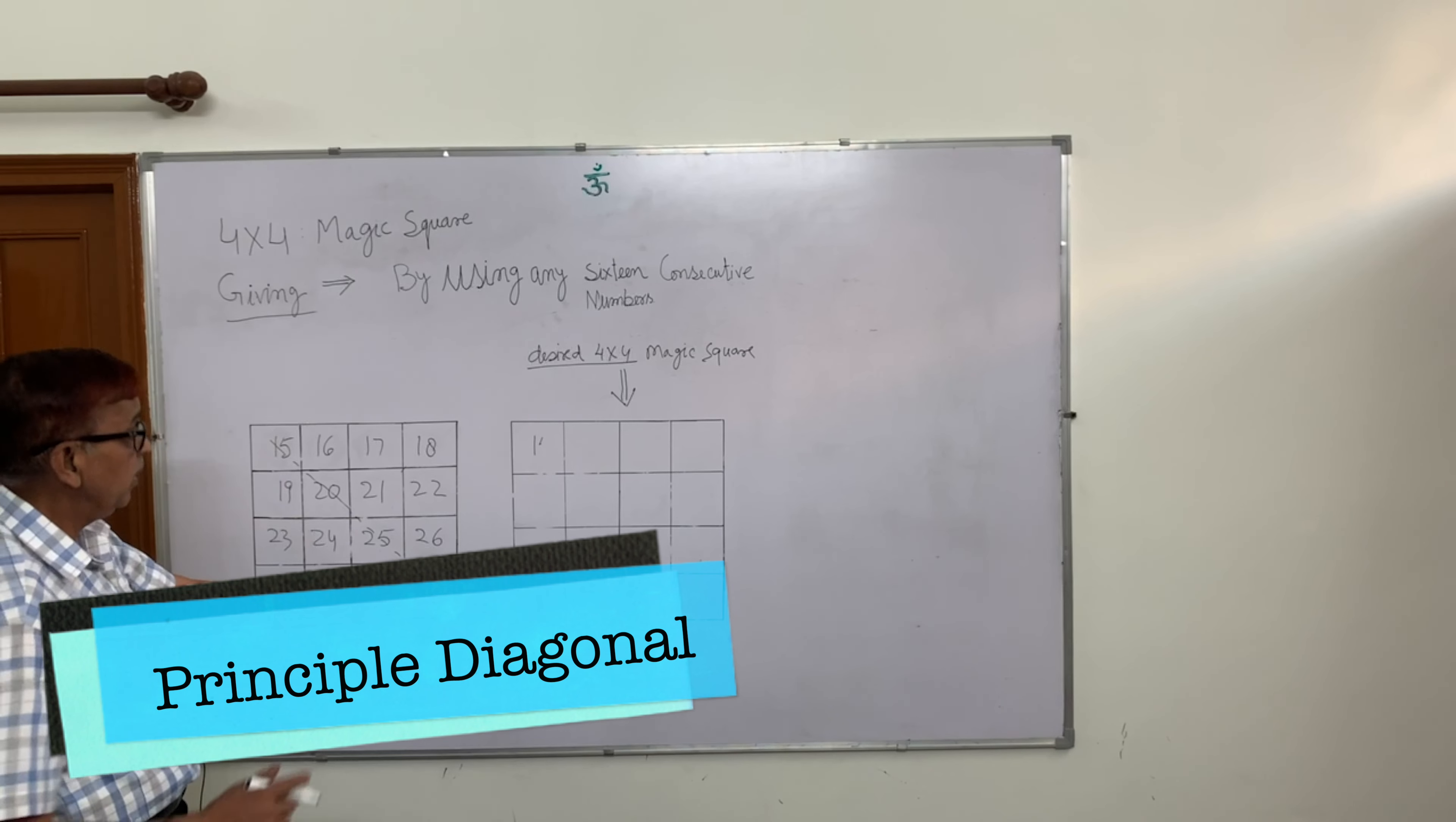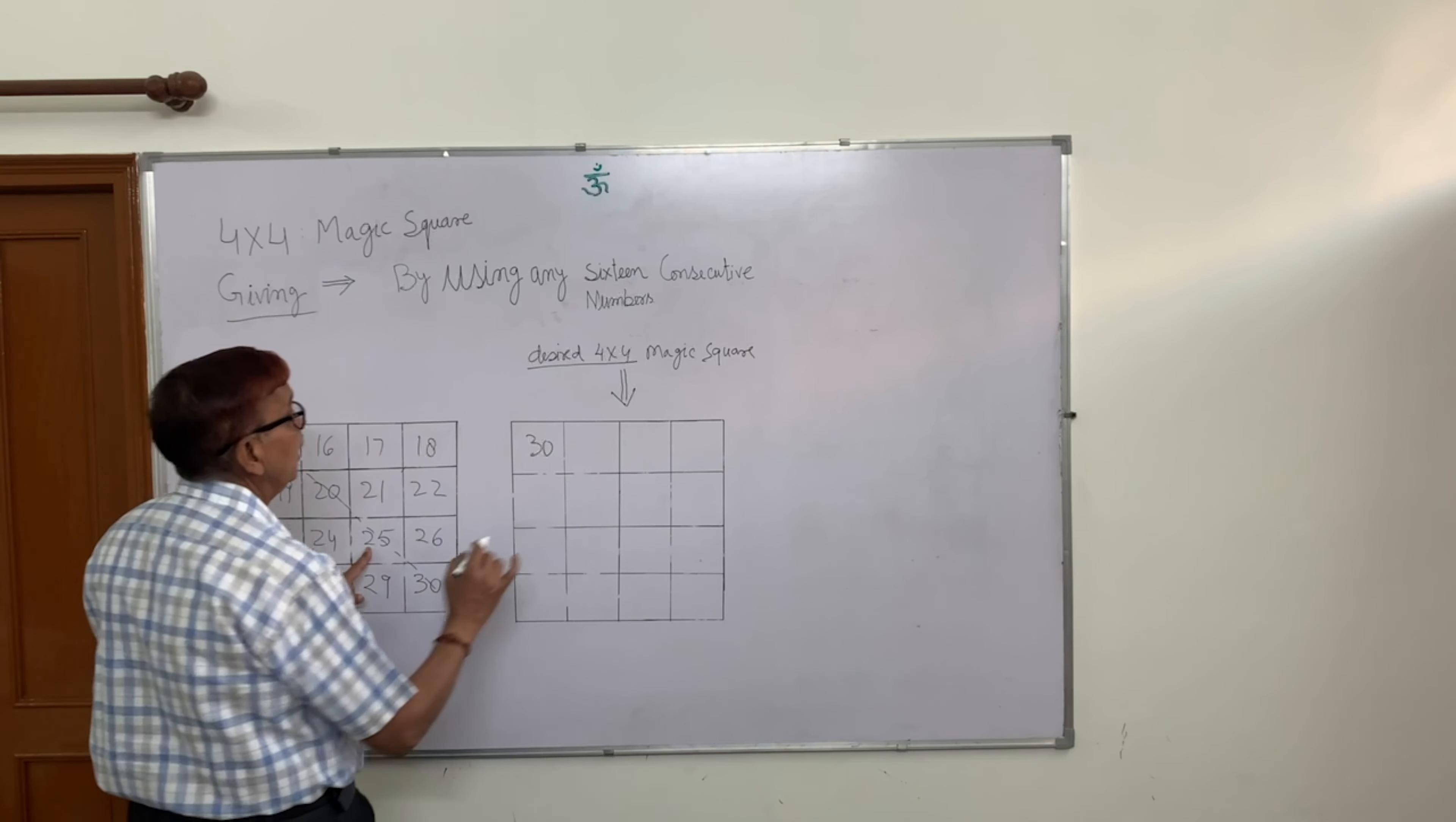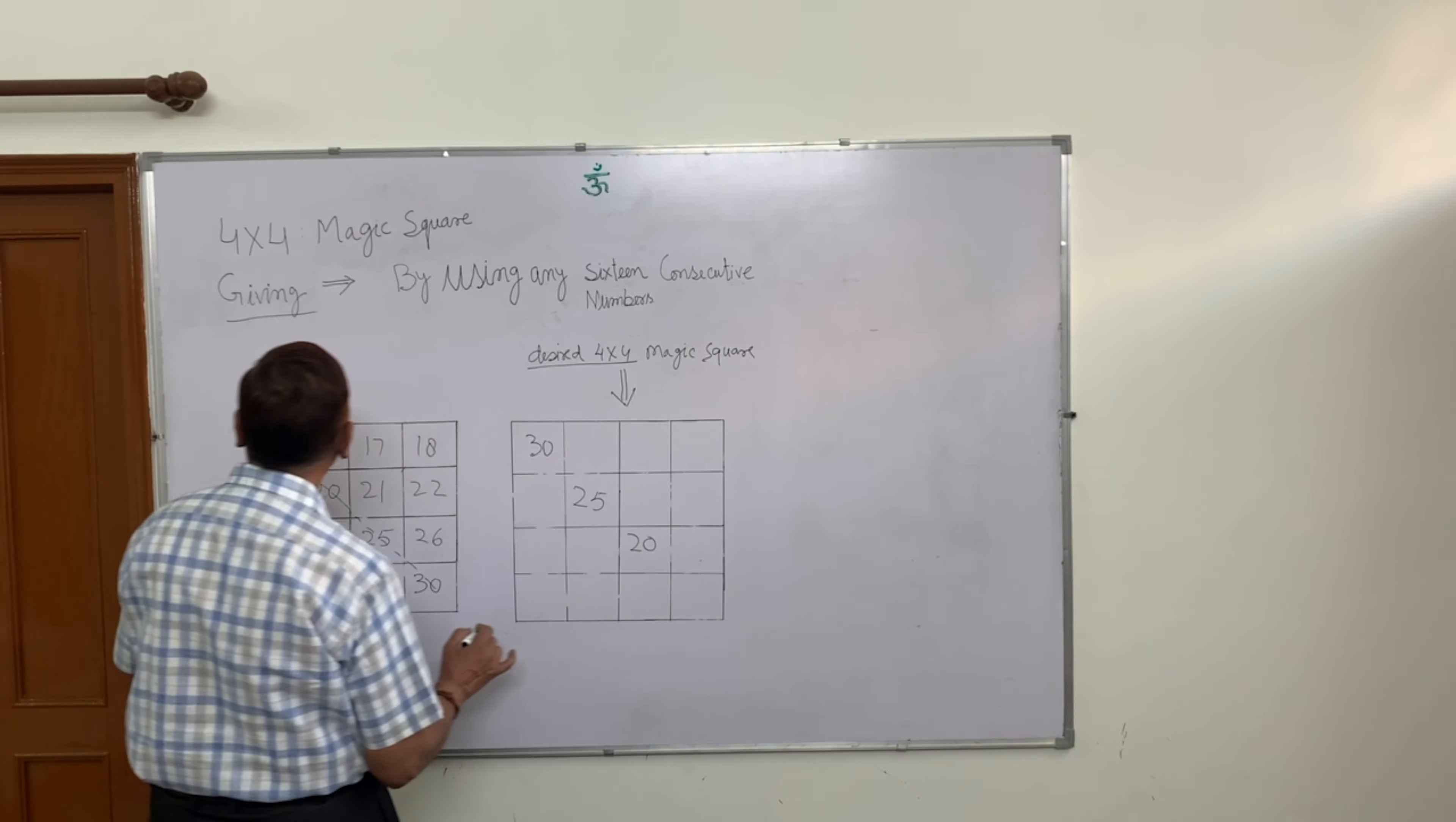So I will write 30. I will write 30. Now I will write 25. I will write 25, then 20, then last is 15.